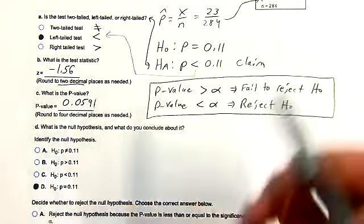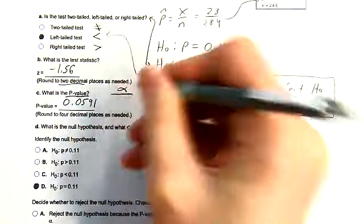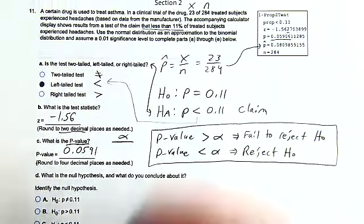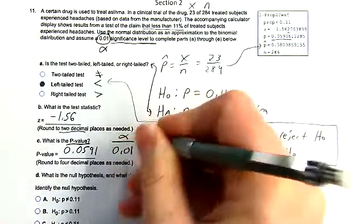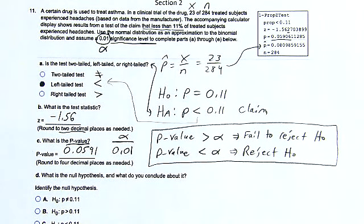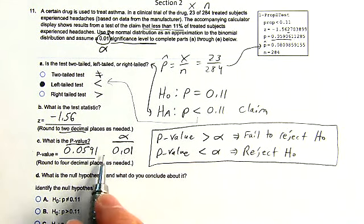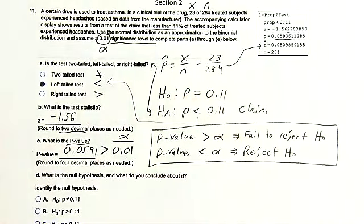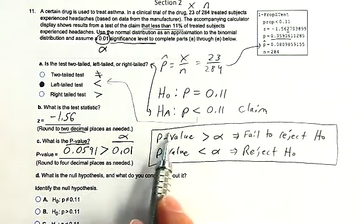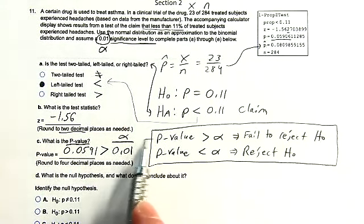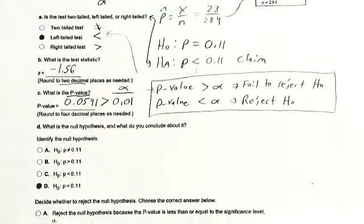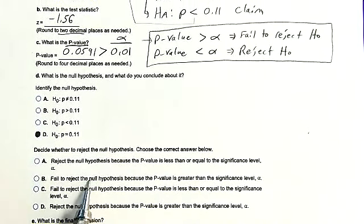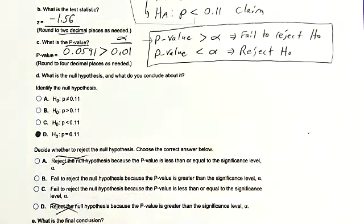We have a p-value. We compare it to alpha in the problem. Alpha is the significance level, set at 0.01. So 0.05 is bigger than 0.01 — the p-value is greater than alpha. We fail to reject the null hypothesis because the p-value is greater than the significance level alpha.